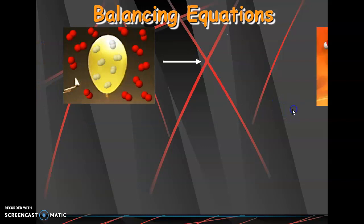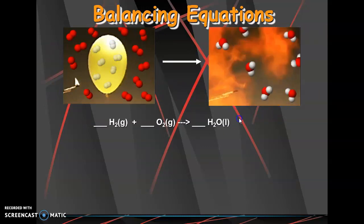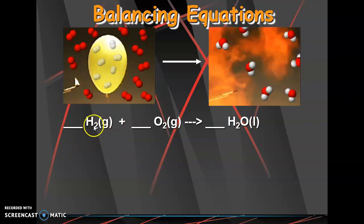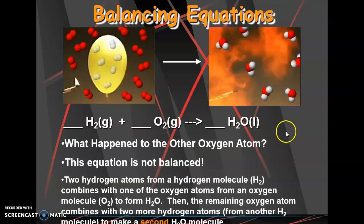So when we're balancing equations, we're talking about balancing the atoms that go in. So as many hydrogens go in, the hydrogens need to come out. As many oxygens go in, oxygens need to come out. And they'll look different, like H and O are separate here, but right here it's together. That's fine. We just need to have the same numbers of each.